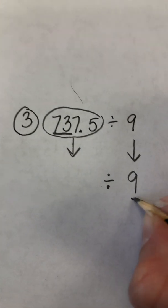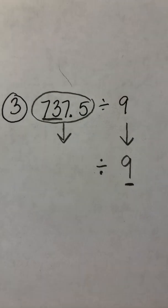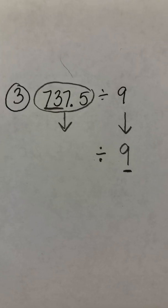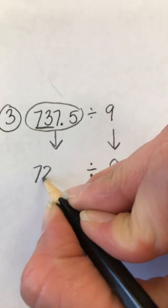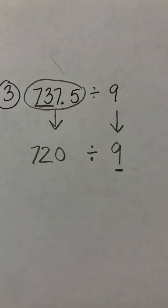The first two digits are 73. So I'm going to ask myself, what number close to 73 can I divide evenly with 9? And if you remember your basic facts, you should know that 72 divides evenly. So I'm going to change that to a 72, and that 7 will become a 0, making my new number 720.